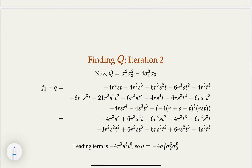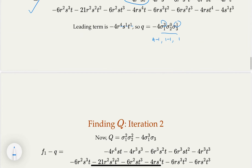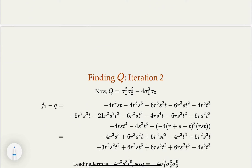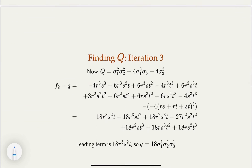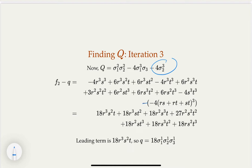The coefficient is negative 4, so we subtract negative 4 times sigma 1, which is R plus S plus T, times sigma 3. After further algebra using the calculator, the leading term becomes degree 3, 3, 0. Then 3 minus 3 = 0, 3 minus 0 = 3, giving one term left. We subtract negative 4 times sigma 2 cubed, getting 18·sigma 1·sigma 2·sigma 3.